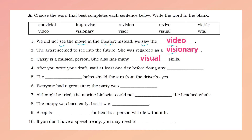Number four: 'After you write your draft, wait at least one day before doing any...' — any what? What do you do after drafting? Revision. We know that the prefix re- refers to 'do again,' repeat, and vi means 'to see something,' and -ion makes it a noun. So it is the act of revising — the act of seeing again — the literal meaning of the prefix, root, and suffix of this word.